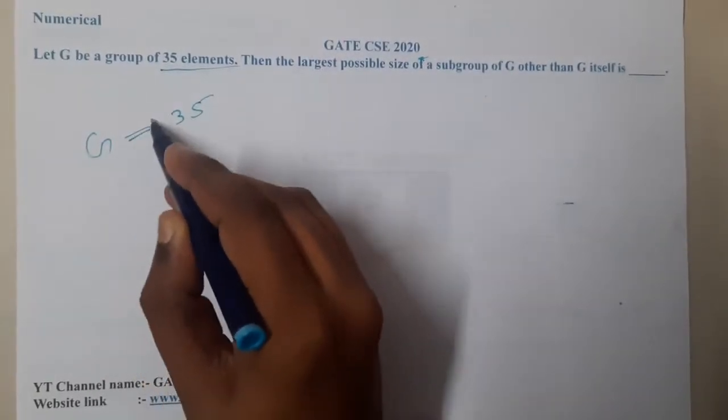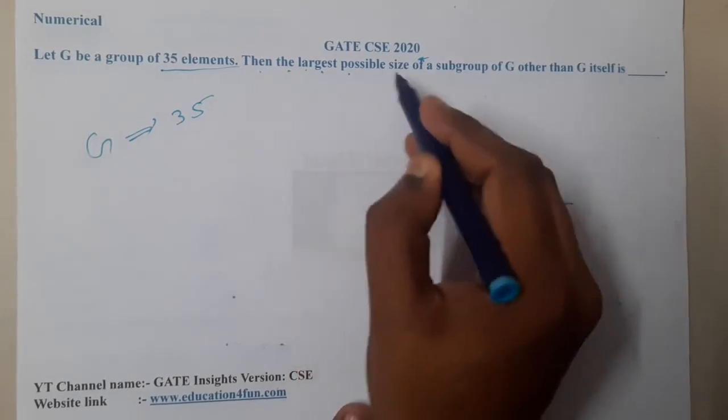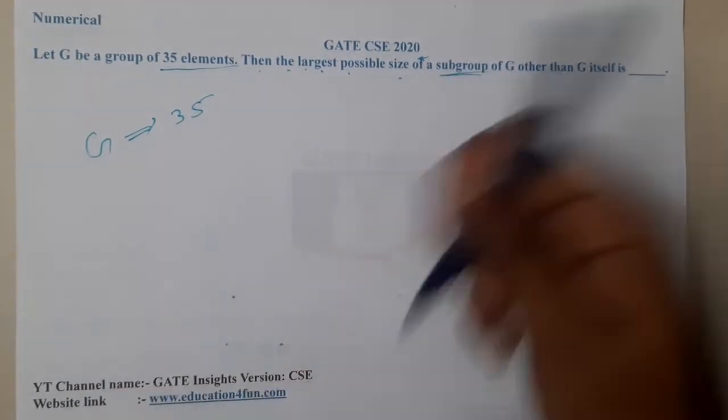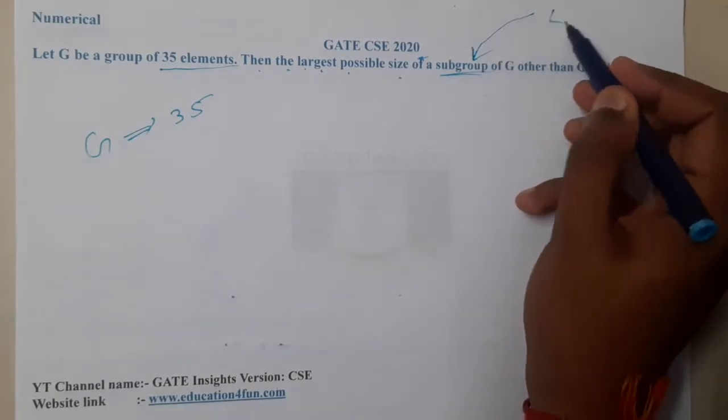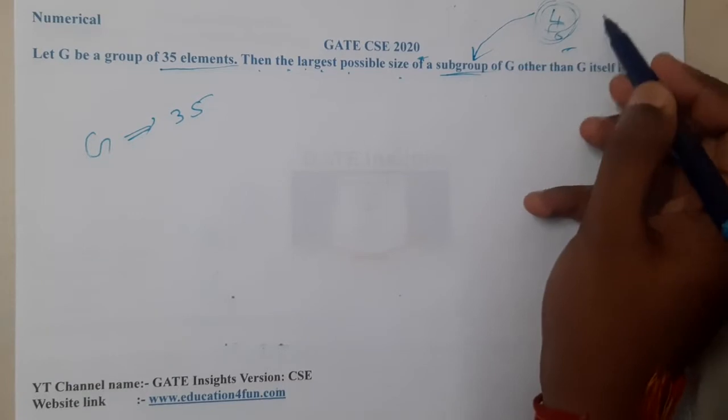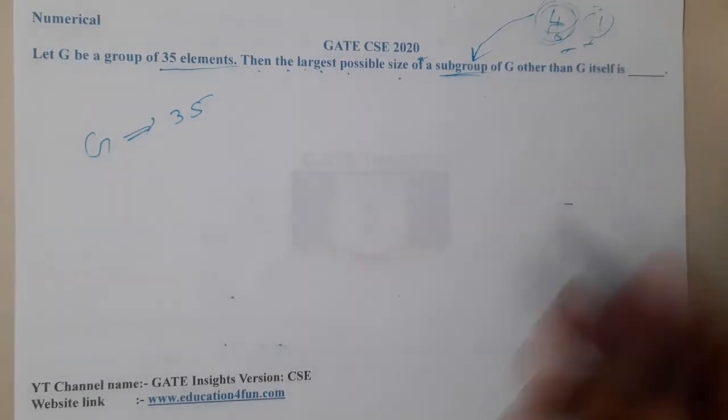Then the largest possible size of a subgroup of G other than G itself is... This question is one of the most commonly asked patterns. It was the fourth or fifth time I am seeing it in the PYQ pieces, and it's only for one mark but it's valuable.